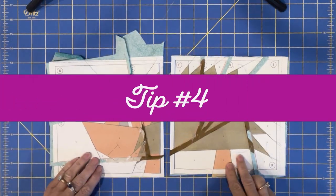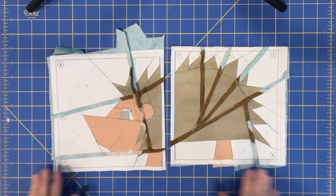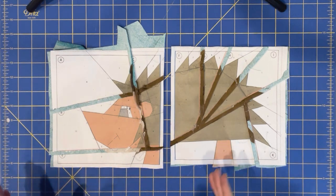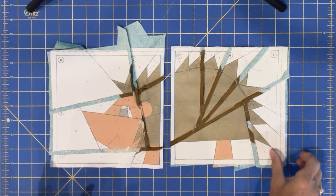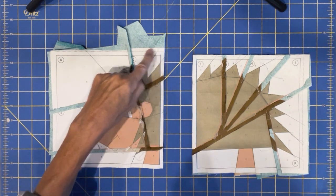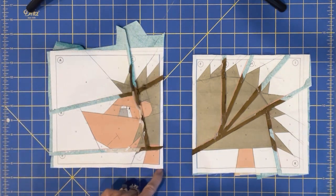And the last tip I'm going to give you today is about trimming up the block or squaring it. For some reason, some people think you just are going to cut on that dotted line. That's a quarter inch away.